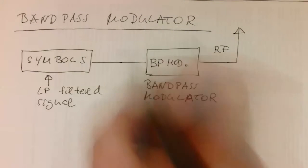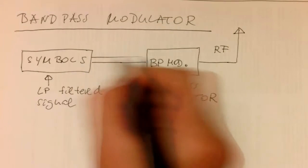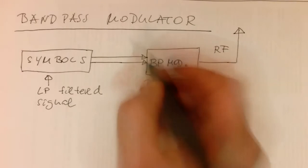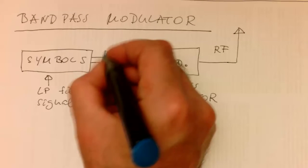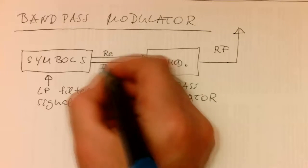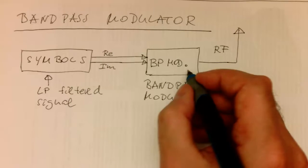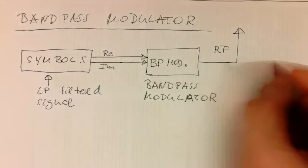Very often, these symbols are actually complex valued symbols. So they have, especially in OFDM, they've got a real and an imaginary part. And then the BandPass modulator turns this into, obviously, a real signal here.